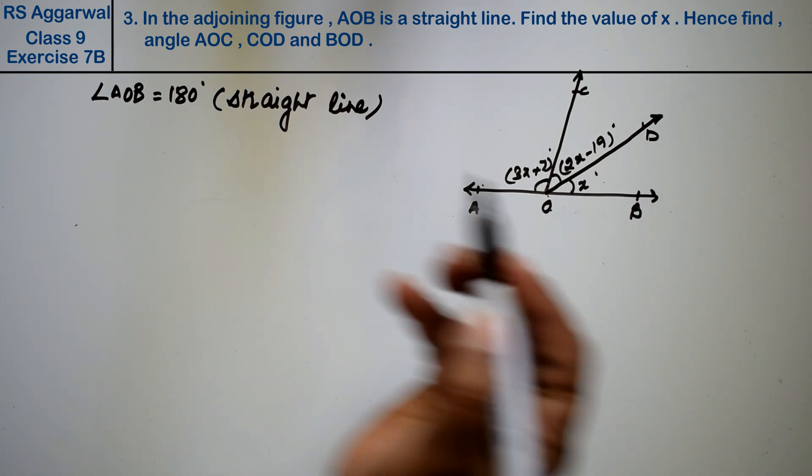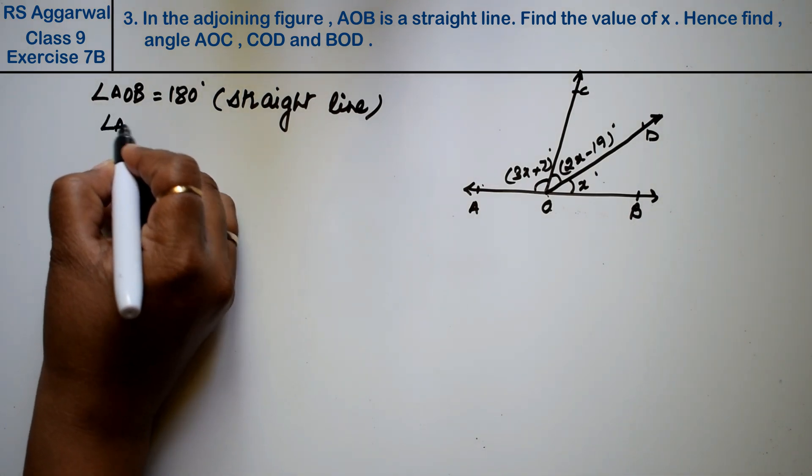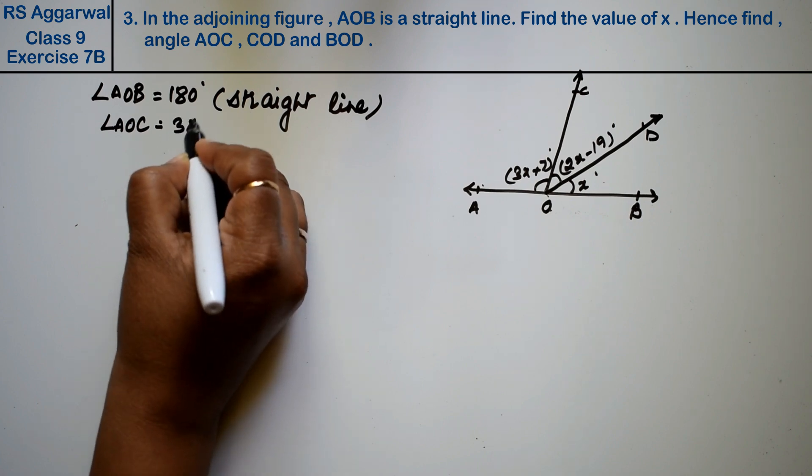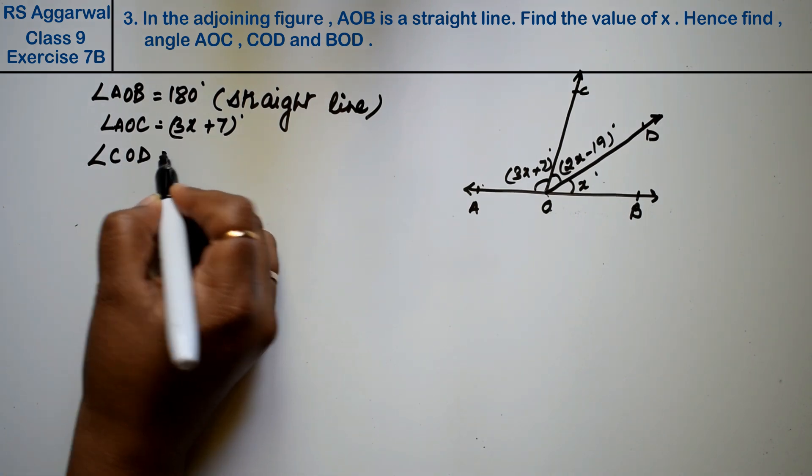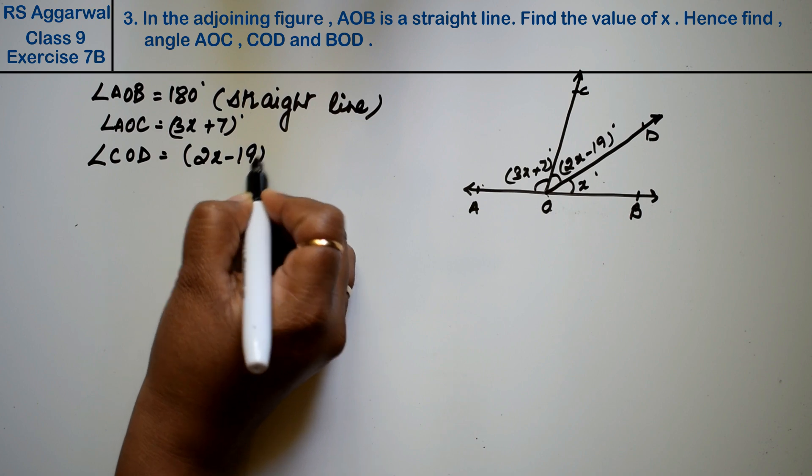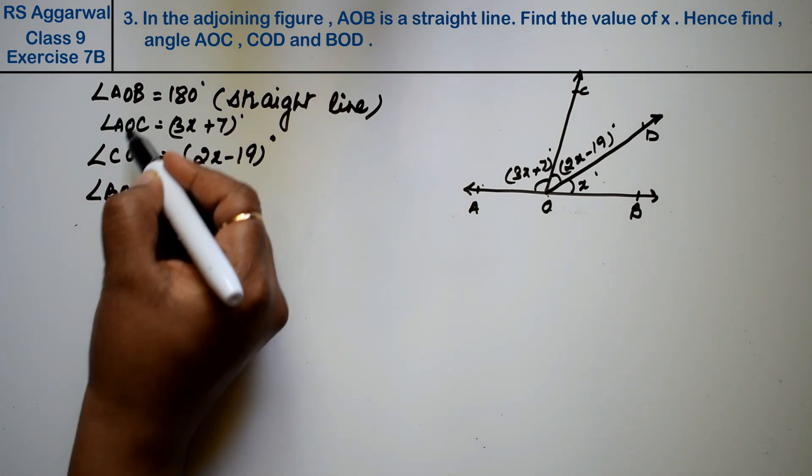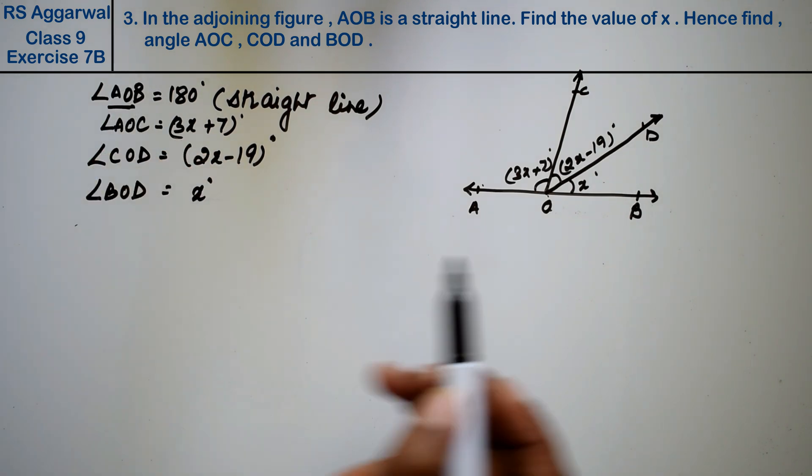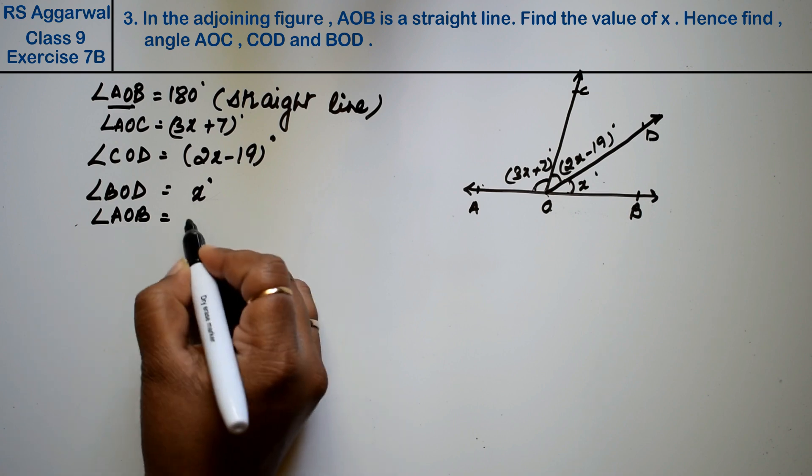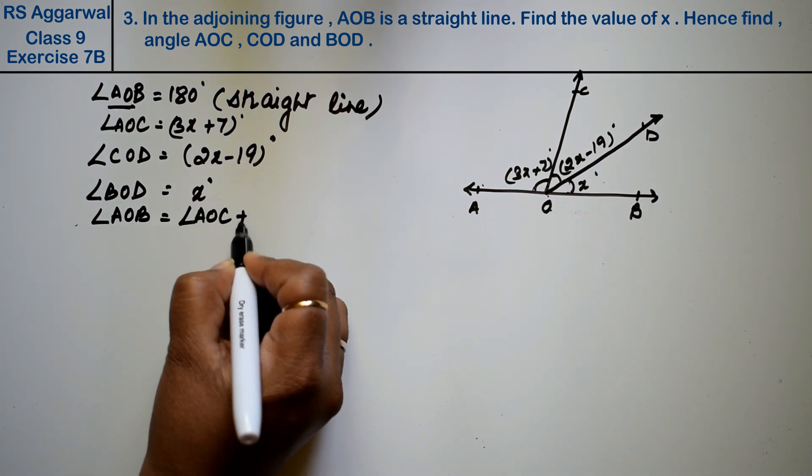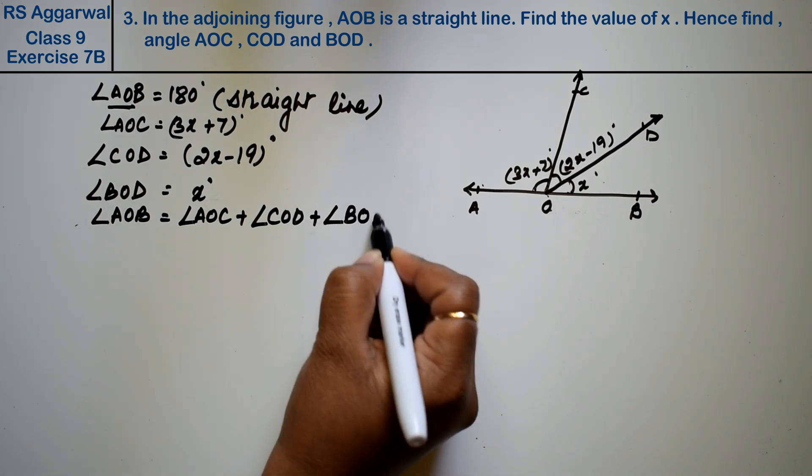So now you can see AOB, by combining what will it become? We know angle AOC value is given as 3x plus 7 degrees, angle COD value is given as 2x minus 19 degrees, and angle BOD value is given as x degrees. These three angles make our AOB. So angle AOB equals angle AOC plus COD plus BOD, right?